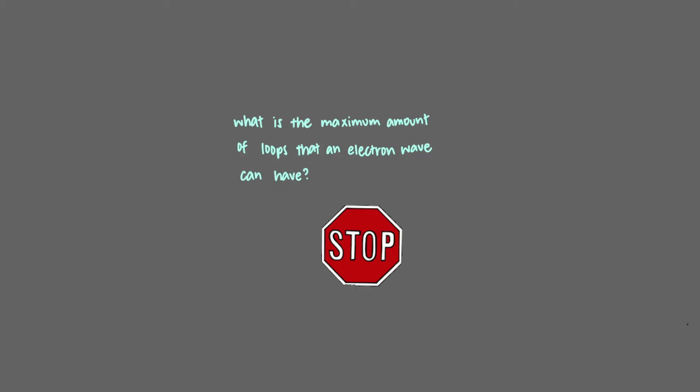What is the maximum amount of loops that an electron wave can have? There is no limit to the number of loops an electron wave can have, and so the theoretical maximum number of loops in an electron wave is infinity. But what does a wave with n equals infinity look like?